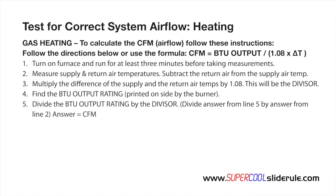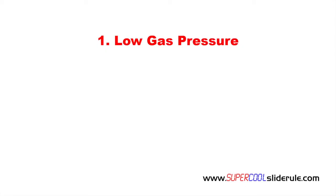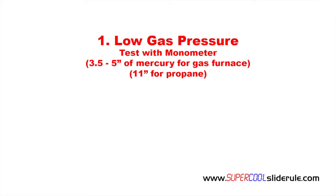If the delta T is too low, the primary causes are low gas pressure. Test the gas pressure with a manometer; ensure that it is between 3.5 to 5 inches of water column on natural gas and about 11 inches on propane.